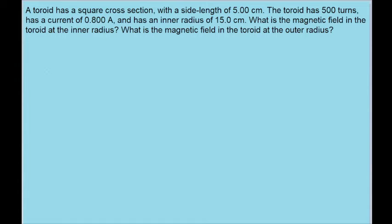Here's a problem in which we have a toroid, and we want to find the magnetic field within the toroid for two different points, two different radii, to be more exact.